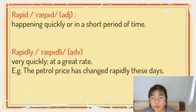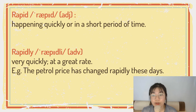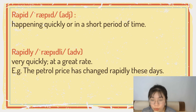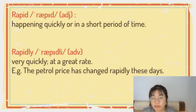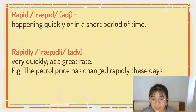So, 'rapid' is an adjective. It means happening quickly or in a short period of time. And 'rapidly' is an adverb, meaning very quickly or at a great rate. For example: the petrol price has changed rapidly these days.